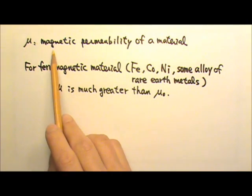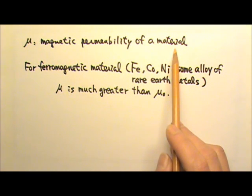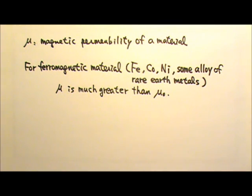By the way, this mu is the magnetic permeability of a material. It is related to how easy it is for us to magnetize the material. For ferromagnetic materials such as iron, cobalt, nickel, and some alloy of rare earth metals, mu is much greater than mu nought, the mu for vacuum. For other material, mu would be very similar to mu nought.